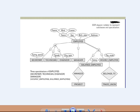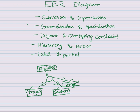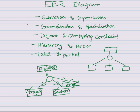Next we go towards generalization and specialization. Generalization is basically just generalizing entities — taking the common entities and grouping them into one generalized entity, which is like employee. So when you have individual entities scattered around, you can generalize all of them into one entity. If each of these subclasses have common properties, you generalize them into a common superclass.